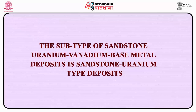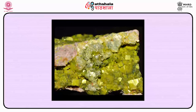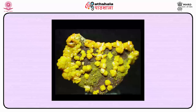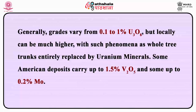The subtype of sandstone uranium-vanadium base metal deposits is the sandstone uranium-type deposit. Uranium deposits of this general type are widespread in the Colorado Plateau region and in Wyoming, having provided over 95% of USA domestic production of uranium and vanadium. Metals occurring in significant quantities include uranium, vanadium, copper, silver, selenium and molybdenum. Grades generally vary from 0.1 to 1% U₃O₈ but locally can be much higher — with such phenomena as whole tree trunks entirely replaced by uranium minerals. Some American deposits carry up to 1.5% V₂O₅ and some up to 0.2% molybdenum.